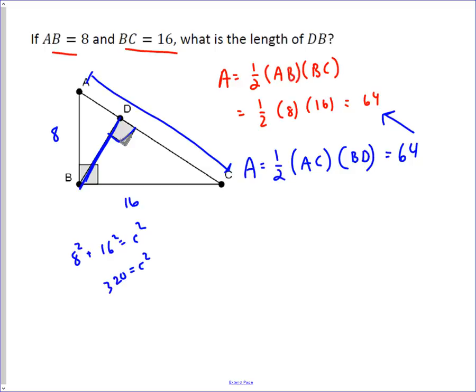When you take the square root of both sides - I'll just do this quickly for you - the square root of 320 simplifies to eight root five.